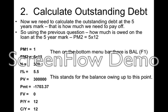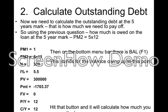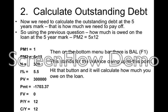So you go to F1, hit balance, and once you get that, you have a balance of how much you actually owe on the loan. You're owing $277,381.81.